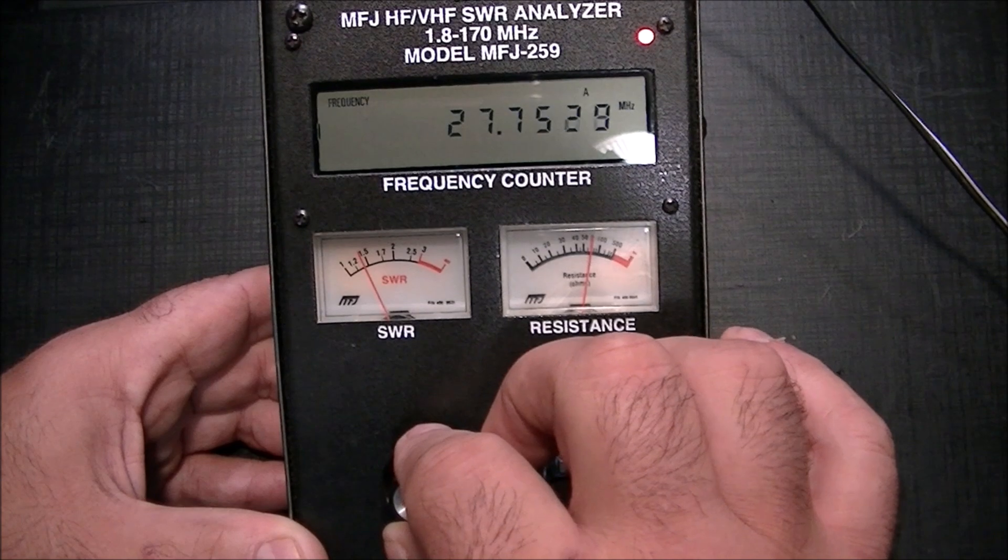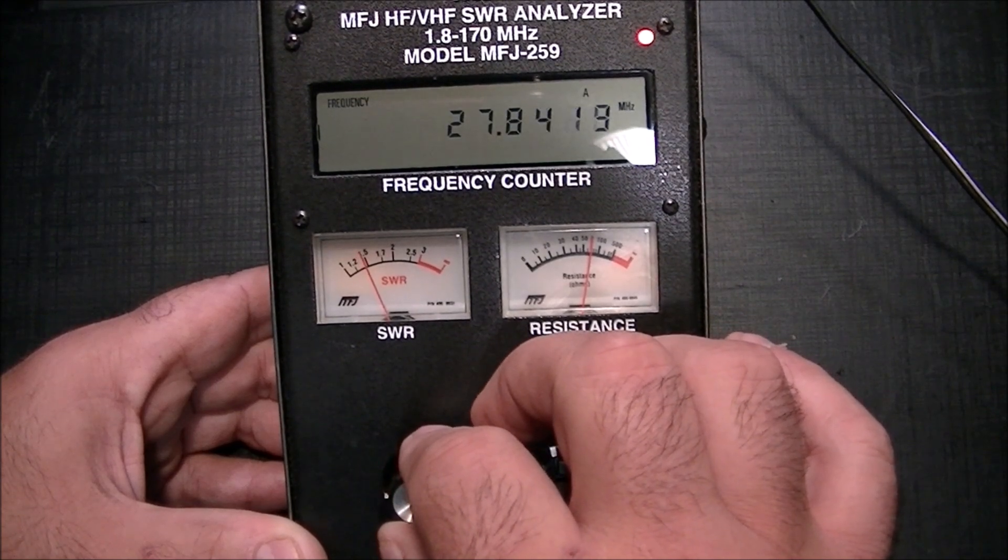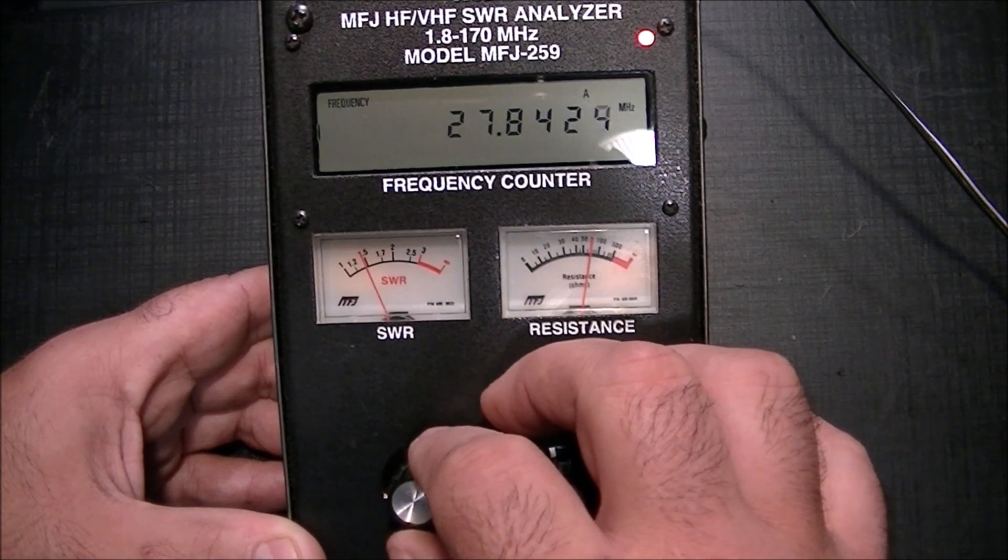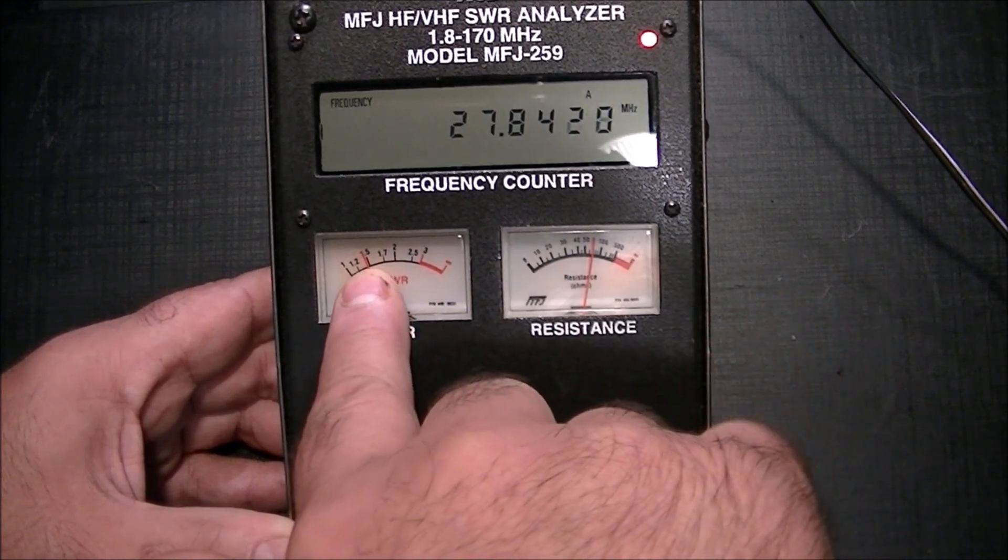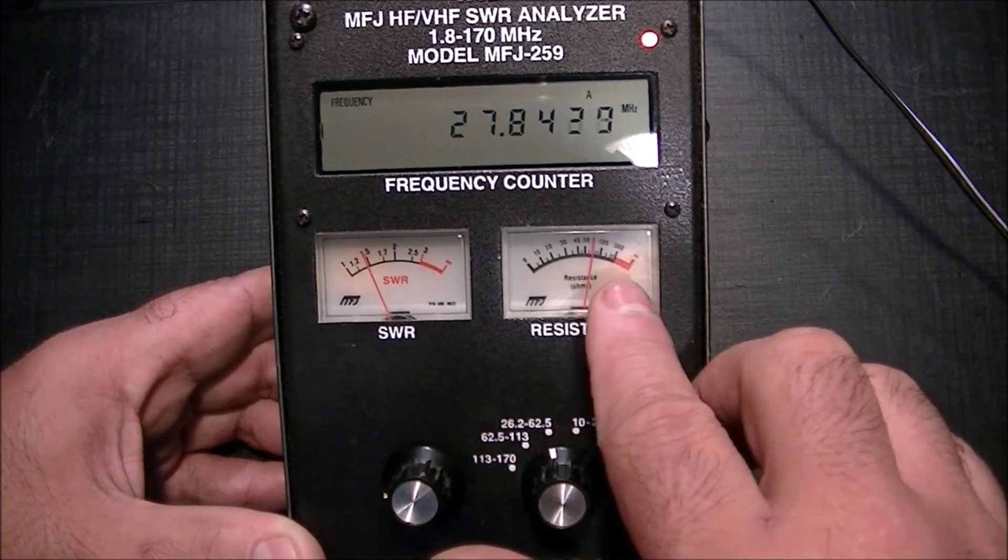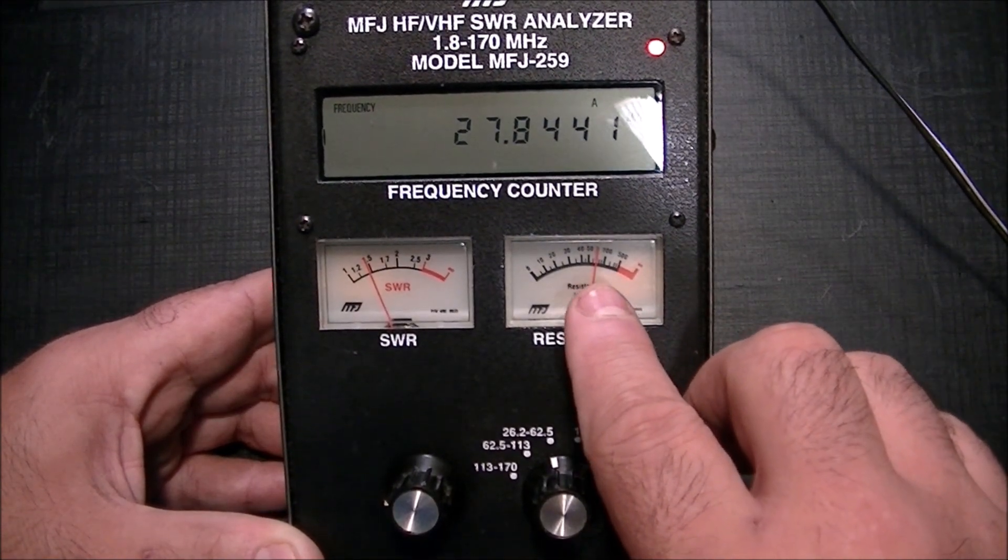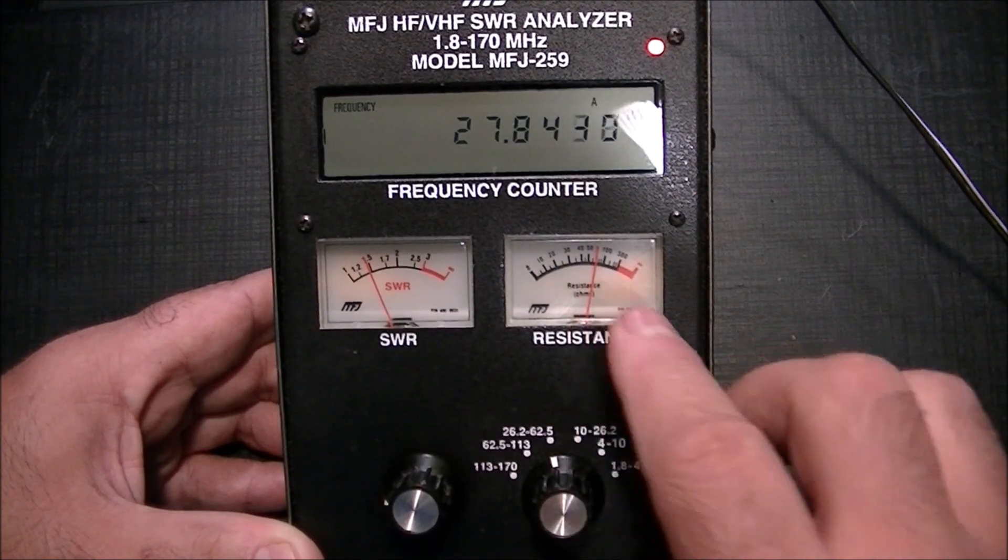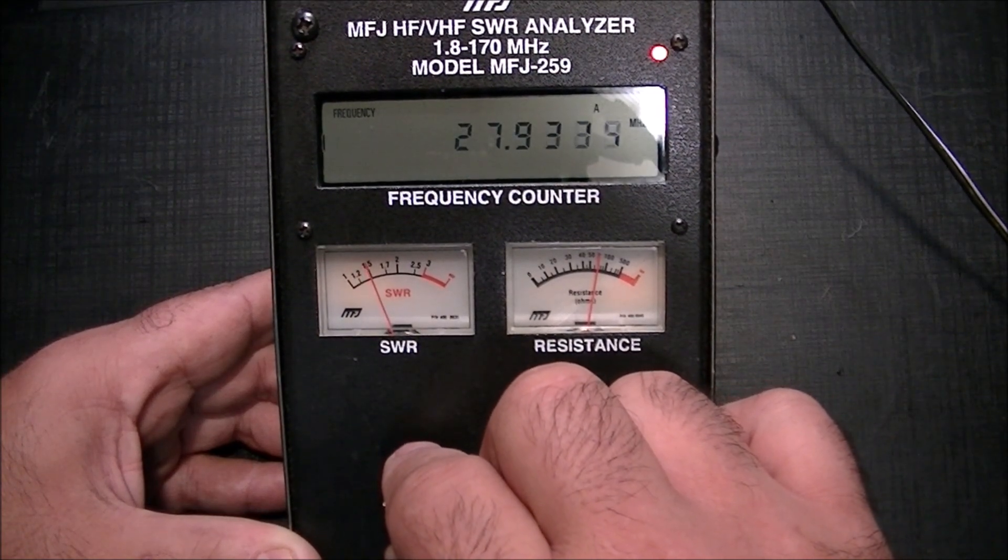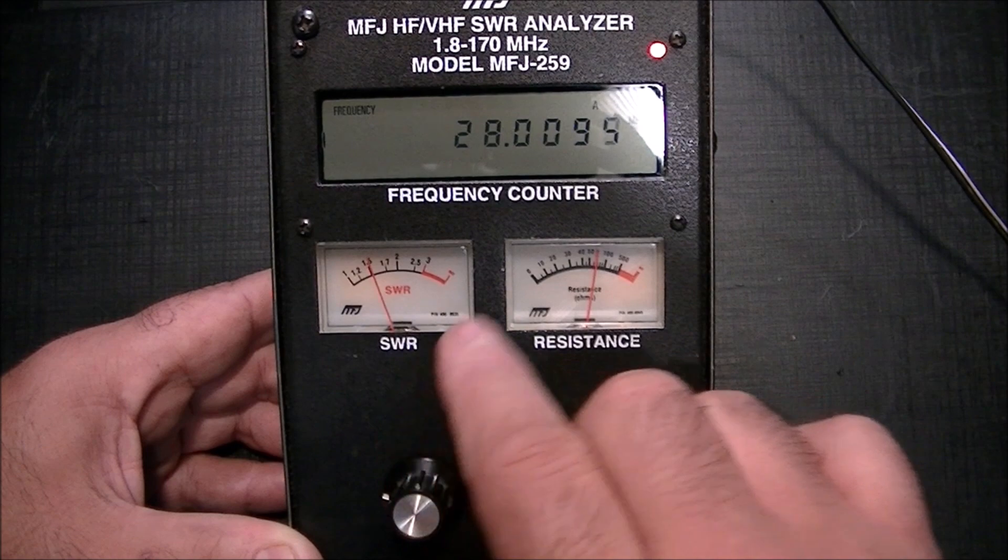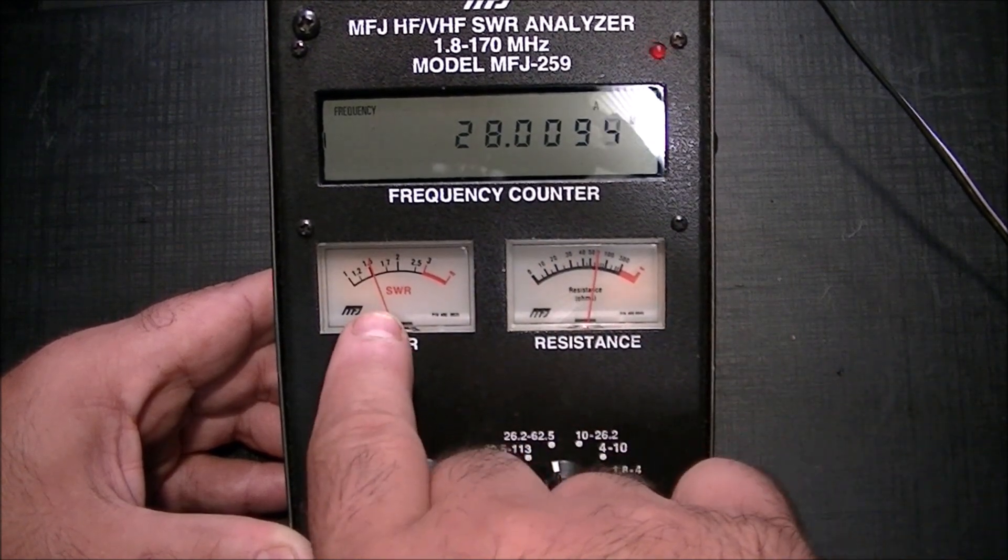Just going to dial up now, go over the band and we'll see as I climb to 27.845, which is well outside the CB band. I see an SWR of 1.5 now and the resistance is a little bit above 50, about 60 maybe right now.